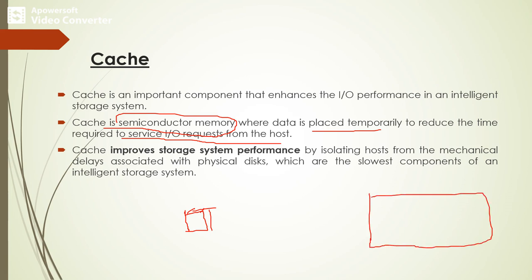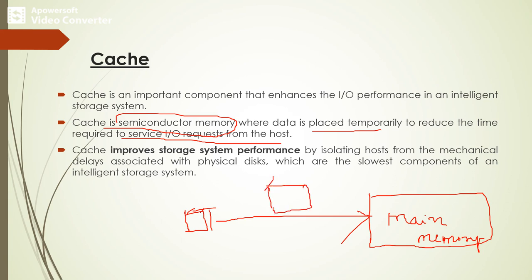Suppose a single host is trying to access data from the main memory — the size of the main memory is large, so it takes longer time. In order to avoid that, we consider a single cache structure. Within that, a part of the main memory is copied so that the host can access the cache directly and perform read or write operations very quickly. Cache improves storage system performance by isolating the host from the mechanical delays associated with physical disks.